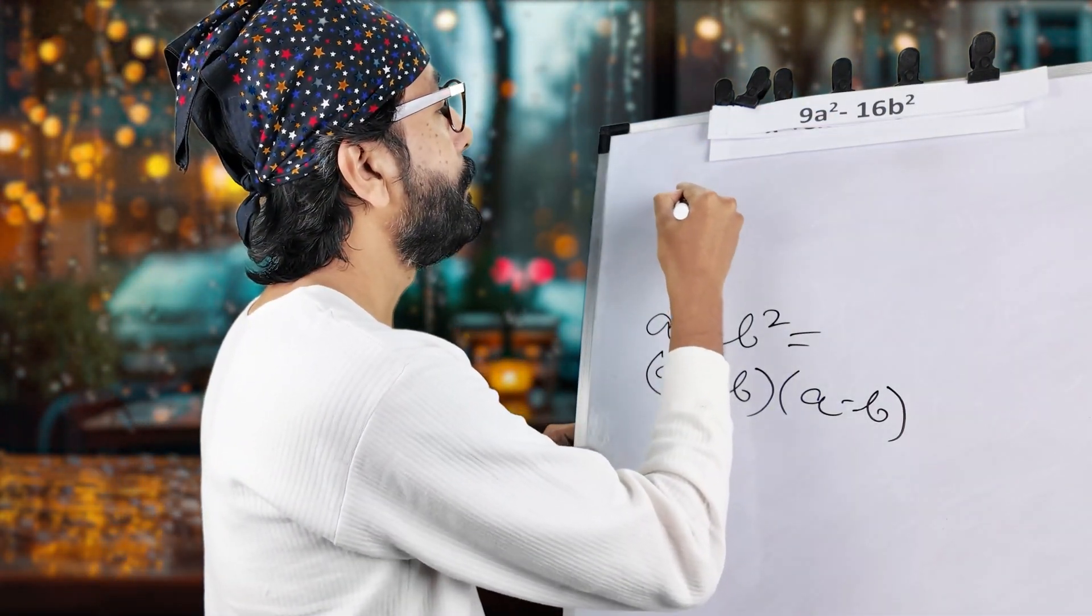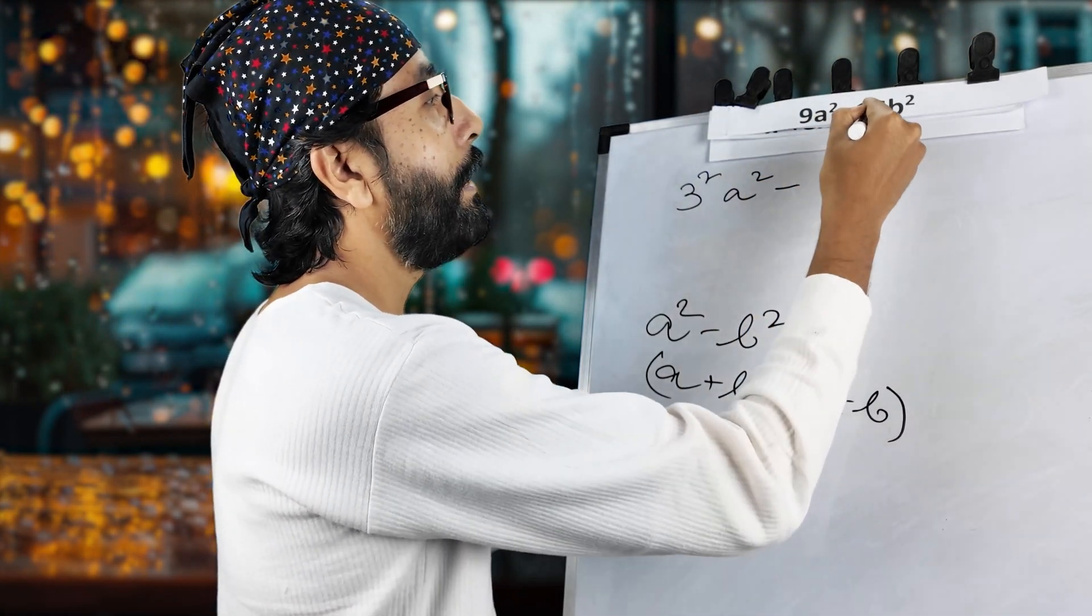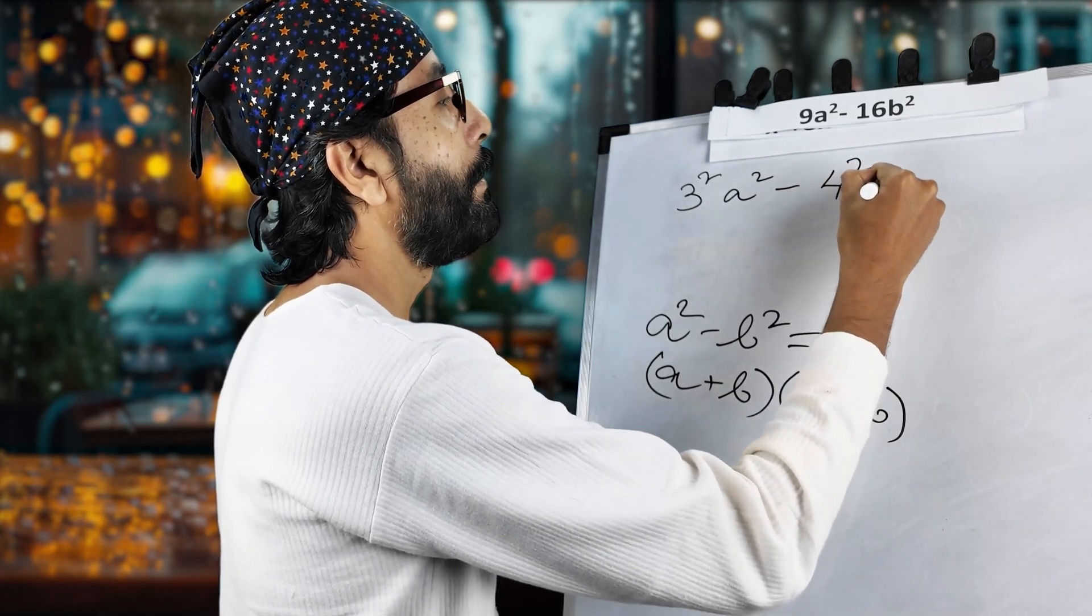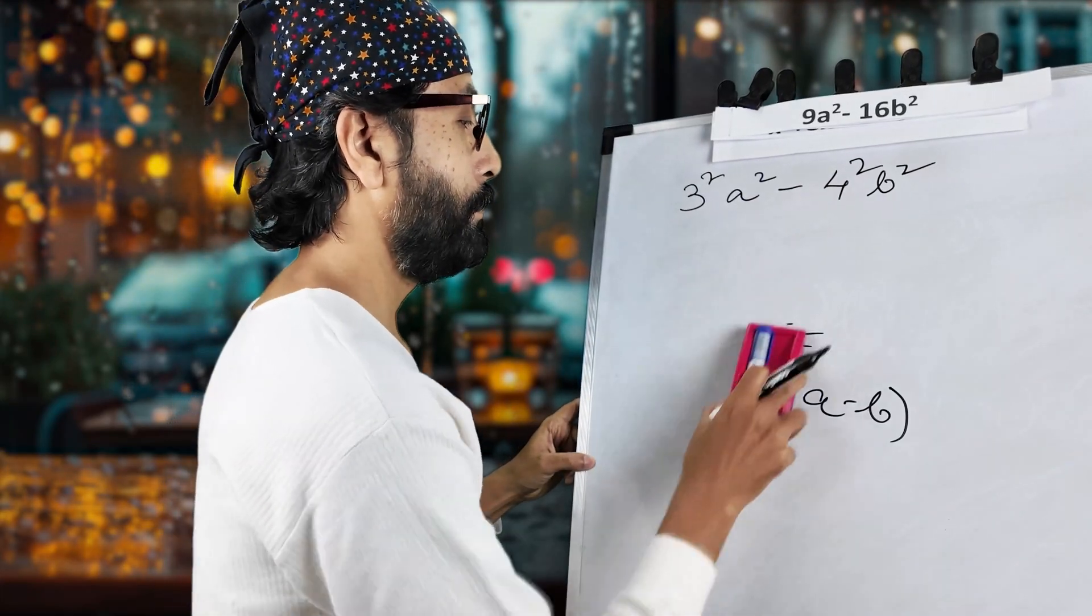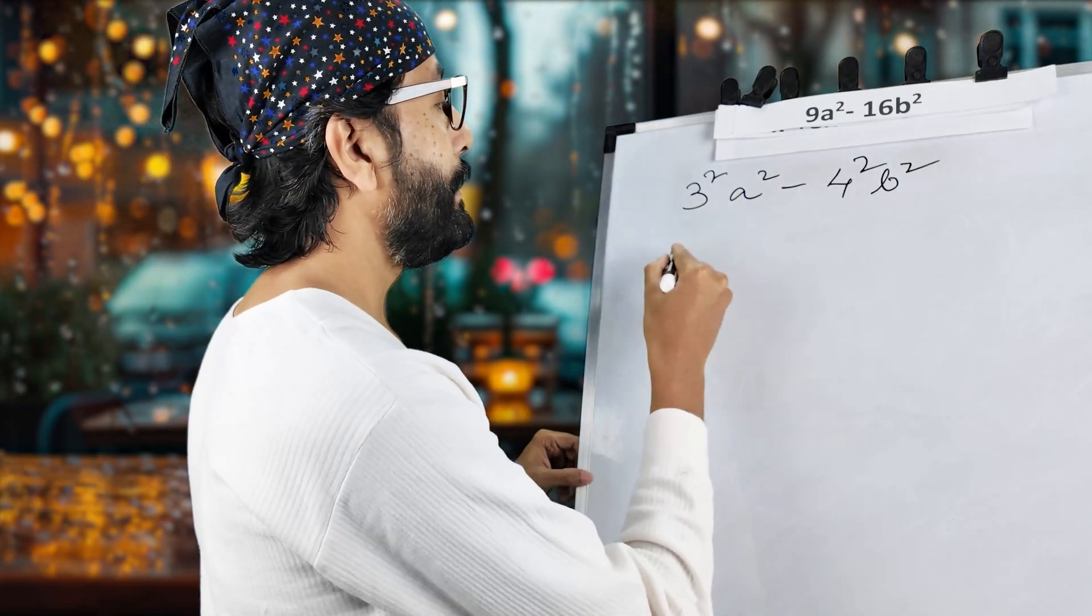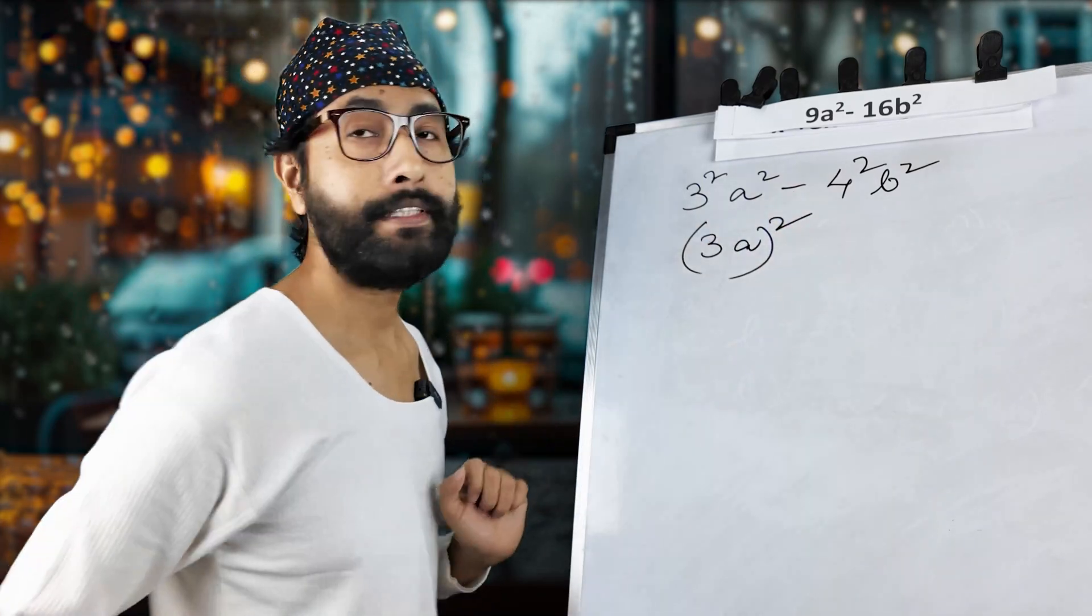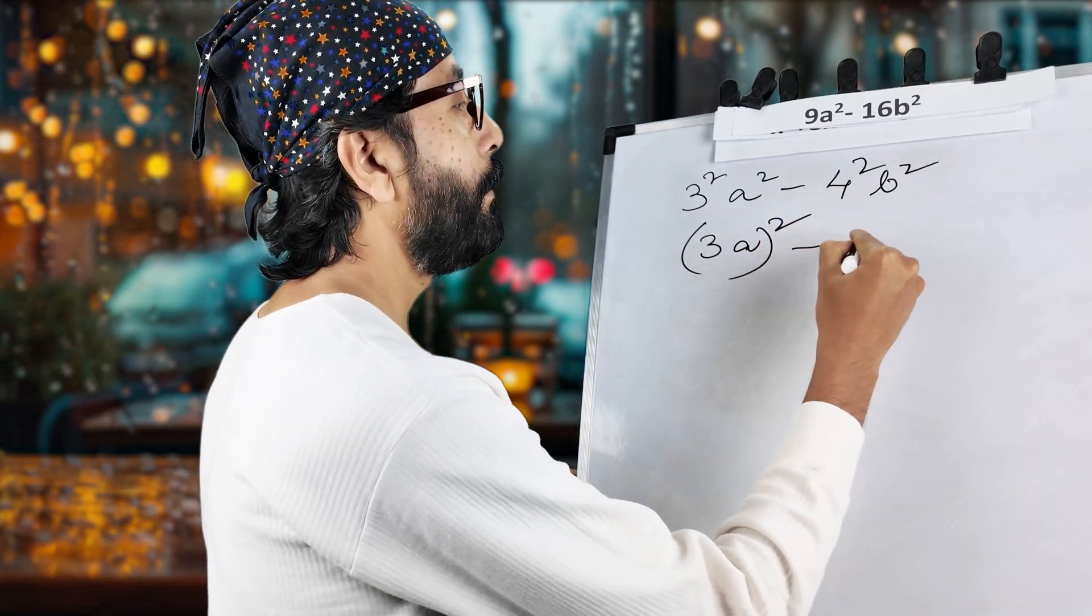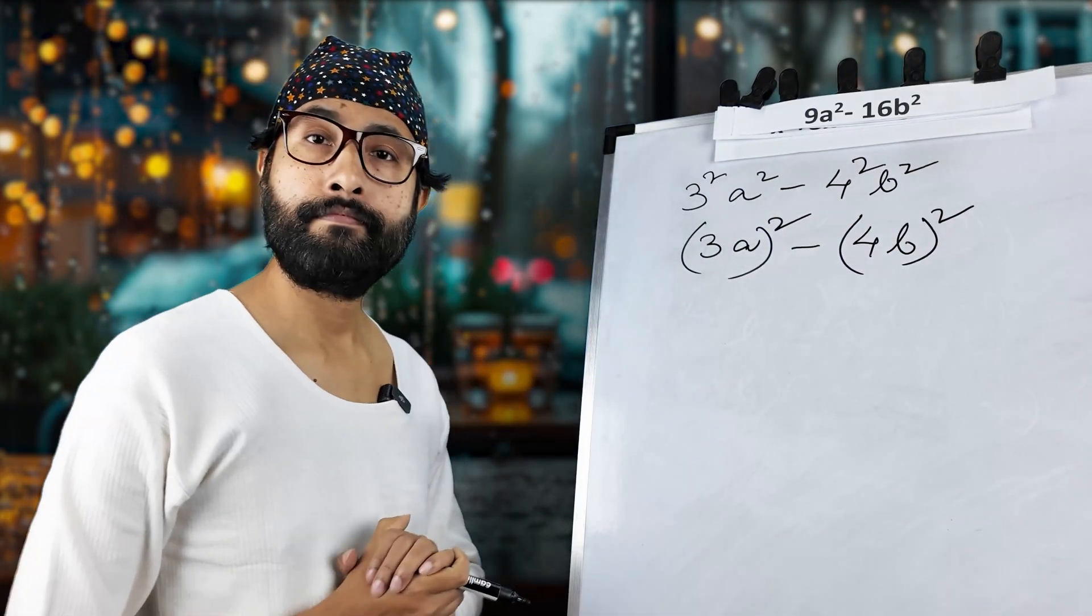This is 3 square, right? 3 square and this is a square. I'm just putting it as it is. And this is 16 means 4 square and b square. Right? I'm just removing this part. It's not required. So, this is... Can we write it in this way? Yes. And same way.